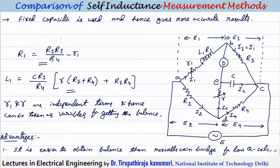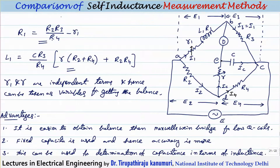The disadvantage of the Anderson bridge is the extra junction makes shielding very difficult. Also, the balance equations for R and L are very complex and large, making calculations tedious.